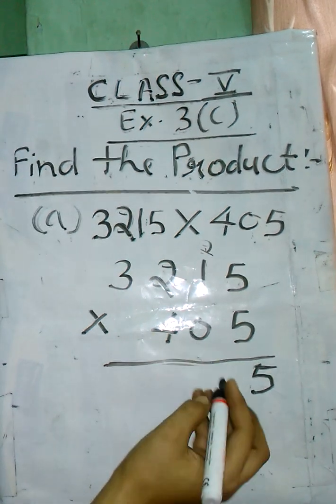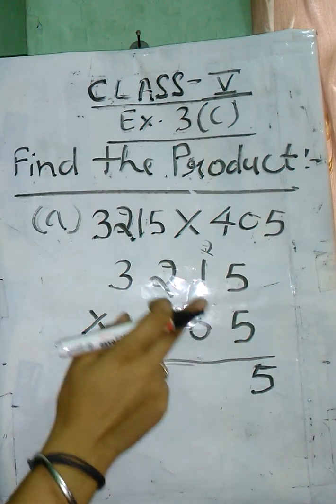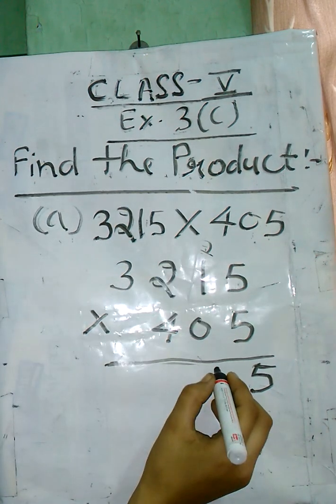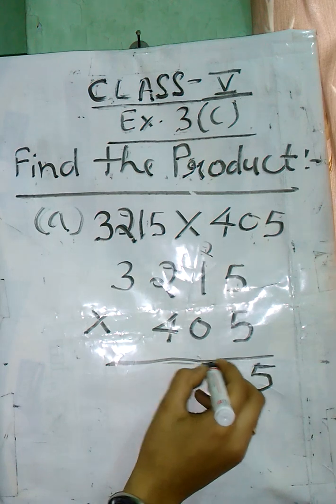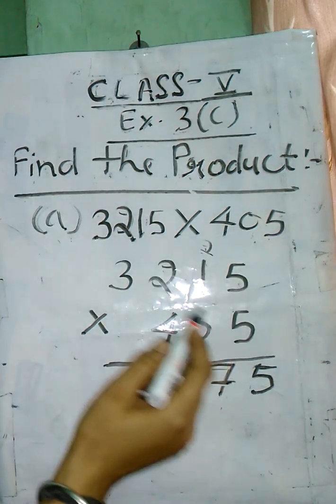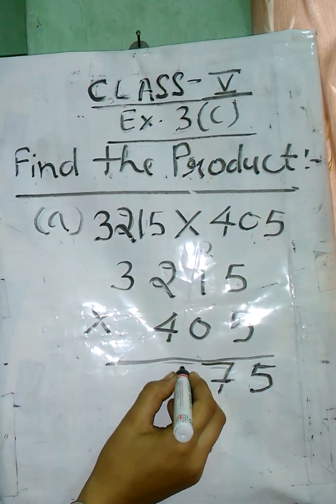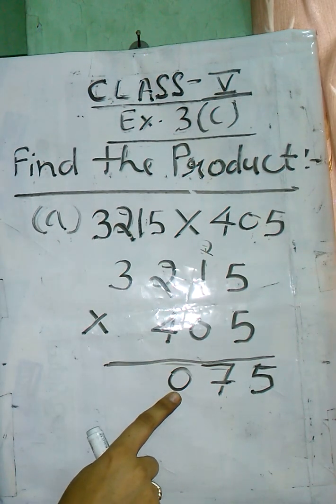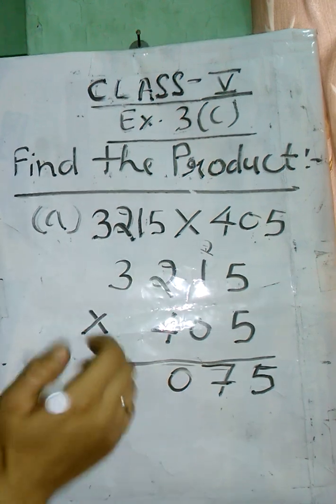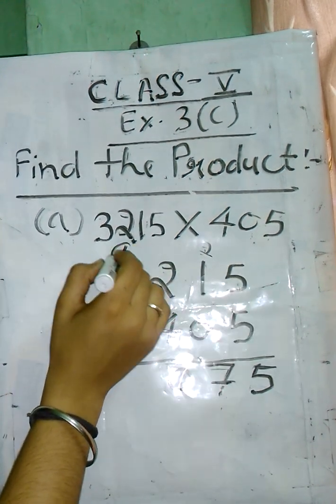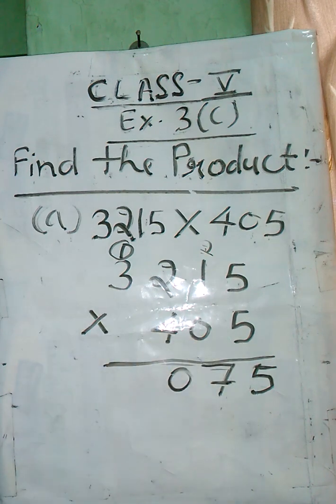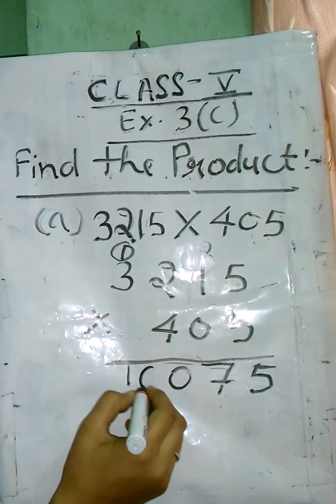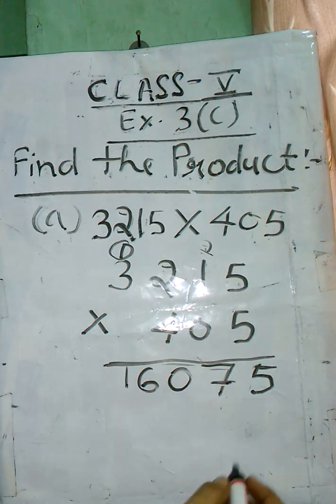Then after, 5 into 2 is 10. Write the unit digit on ones place, 1 carry over on thousand place. 5 into 3 is 15, plus 1 is 16. Now move to next number.